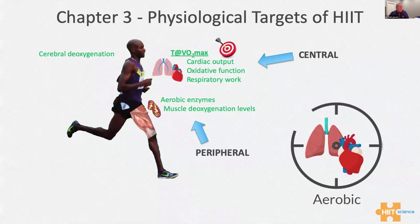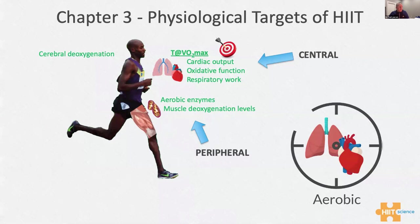We color-code these throughout — green for oxidative, red for anaerobic, and black for neuromuscular. Typically when we're looking at long and short interval VO2 max sessions and repeated sprint efforts and game-based training, we're targeting central and peripheral aerobic oxidative adaptations: cardiac output, making stroke volume larger, enhancing ventricular contraction, respiratory work at the central level, and at the peripheral level — aerobic enzymes and muscle deoxygenation. This is likely the most important adaptation hierarchy-wise that you get from a HIIT session.